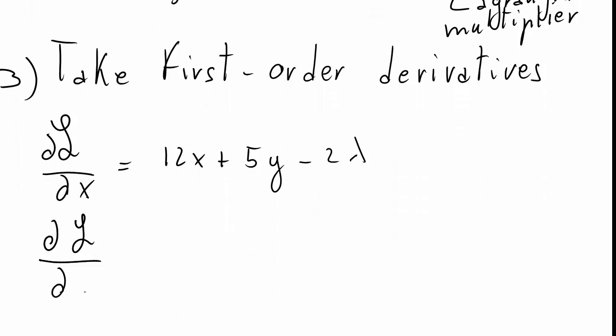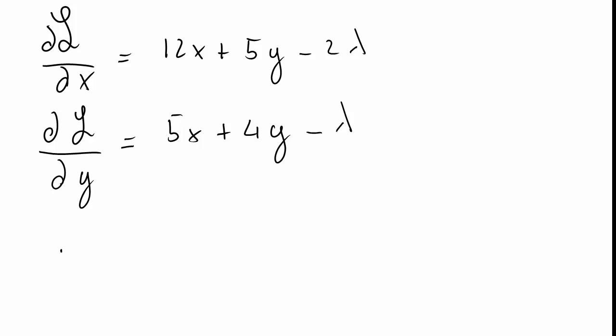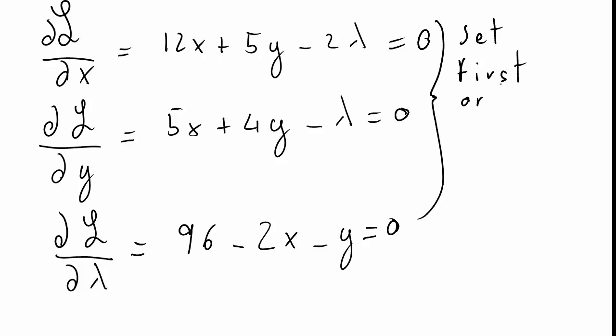Now the second first order condition will be the derivative of the Lagrangian function with respect to y, and this is the respective derivative. Check that by yourself. The third first order condition will be the derivative of the Lagrangian function with respect to lambda. You will notice that this derivative is equal to the budget constraint, and that's always true. It will always be that with the Lagrangian multiplier method the derivative with respect to lambda is the constraint that you are imposed.